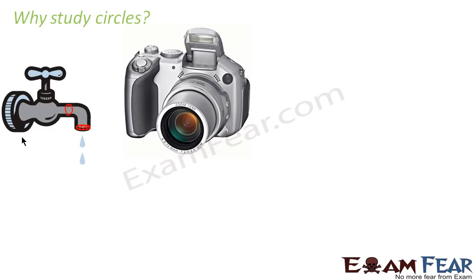Also, if you see the camera lens we use, it also has a circular shape. The lens is circular. So if you want to find a lot of things about a camera, you can find them using the area of a circle.